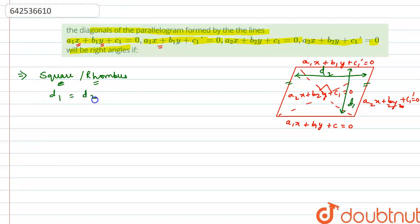And by the formula of distance between two parallel lines, we can find d1 as d1 will be c1 dash minus c by root of a1 square plus b1 square by the distance formula between two parallel lines.